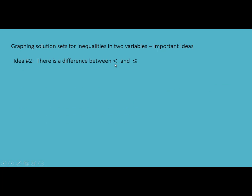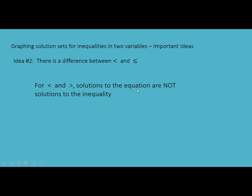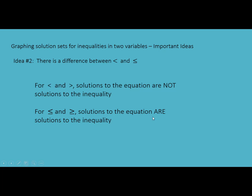The second important idea is the difference between strict inequalities and more inclusive inequalities. For less than and greater than, these are strict inequalities — solutions to the associated equation are not going to be solutions to the inequality. But for less than or equal to and greater than or equal to, solutions to the associated equation are solutions to the inequality. When we graph these, there will be a difference between strict and more inclusive inequalities.